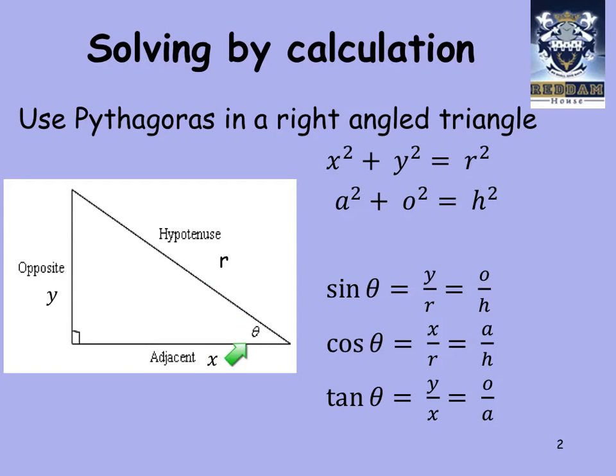Taking theta into consideration, sin of theta is going to land up being opposite over hypotenuse. Cos of theta is going to land up being adjacent over hypotenuse. And tan of theta is going to land up being opposite over adjacent. And obviously those translate quite nicely into x's and y's. You know all of this from math, so it shouldn't be a problem at all.